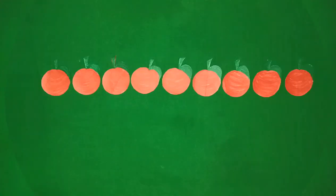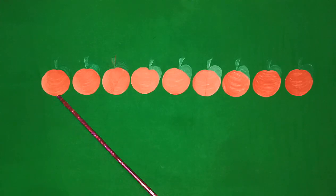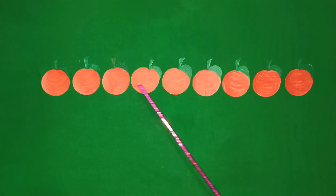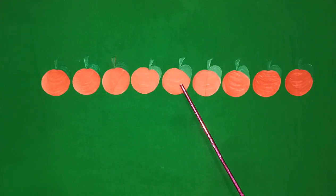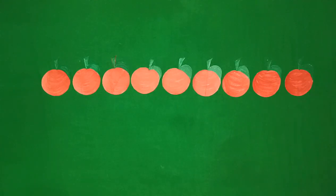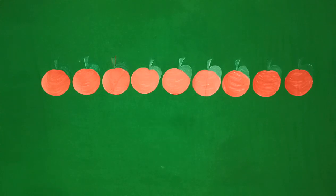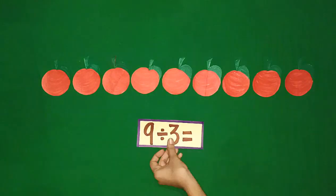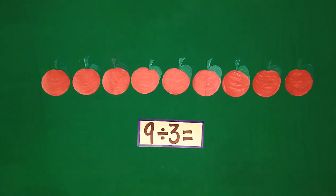Students, there are some apples. Let's count: 1, 2, 3, 4, 5, 6, 7, 8, 9. There are 9 apples. Now, we will make equal groups of 3 apples.